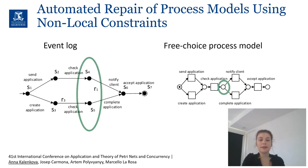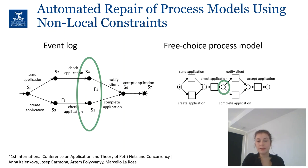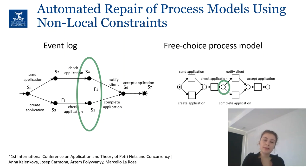So let us consider this event log and encode it as a transition system. After constructing a transition system we analyze all the states of this transition system and find states that correspond to choice places of Petri nets.